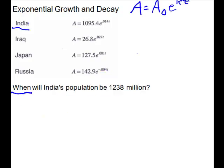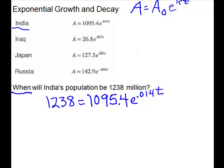Our next question is the first one where we're going to have to do any math. It asks: when will India's population be 1,238 million? So we look at India's population, and here is their growth model. They want to know a future population, so this is going to be the A. So we have 1238 equals 1095.4 e to the 0.014t. The question is when, so we are looking for t.